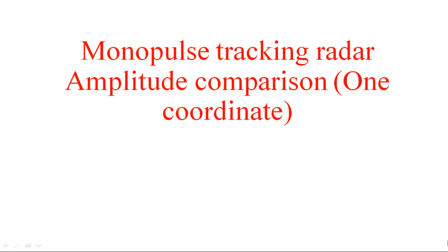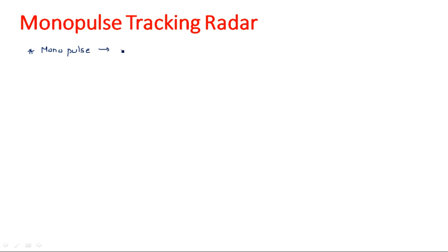In this video I am going to explain about monopulse tracking radar, which is nothing but amplitude comparison. By seeing the name 'mono pulse' - mono means single - so it is nothing but single pulse operation. Only one pulse is sufficient to get the target information and to track the target.